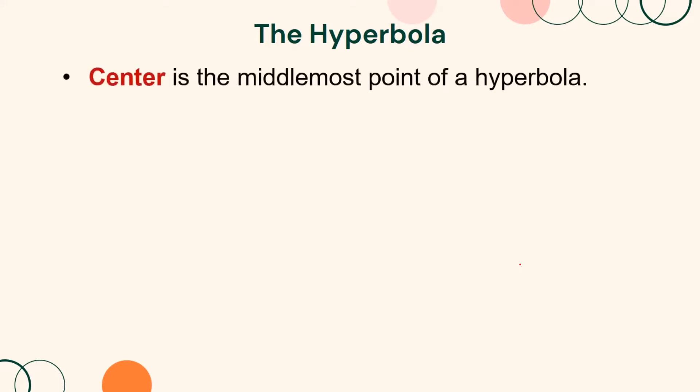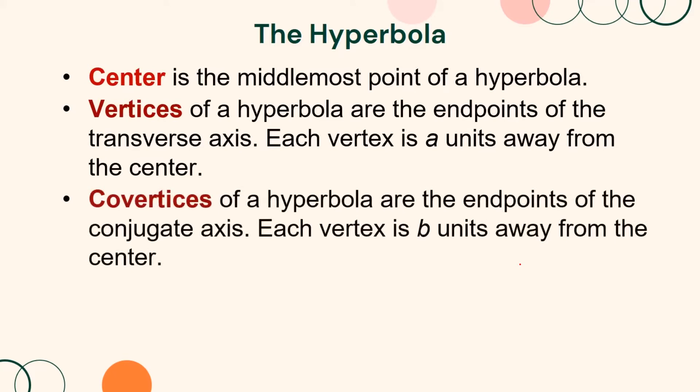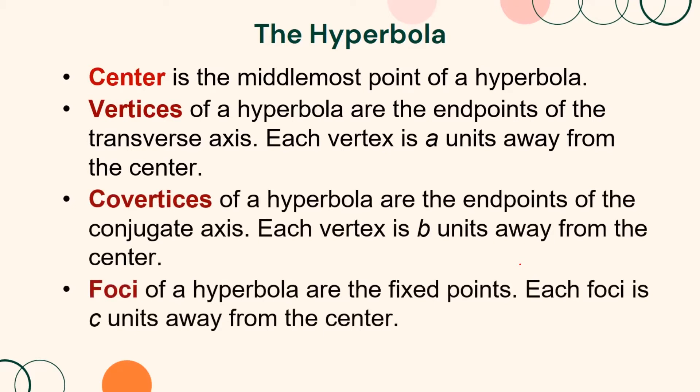We have also determined the elements of the hyperbola as follows. The center is the middlemost point of a hyperbola. The vertices are the endpoints of the transverse axis, each a units away from the center. The co-vertices are the endpoints of the conjugate axis, each b units away from the center. The foci are the fixed points, each c units away from the center.